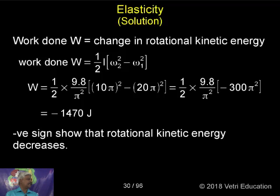So half I value given in the problem, 9.8 into π squared, ω₂ is 10π, ω₁ is 20π. Therefore, on simplification, we get 1470 joules.